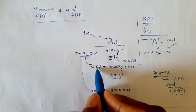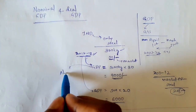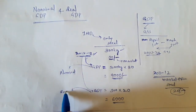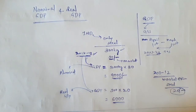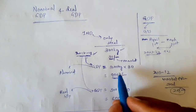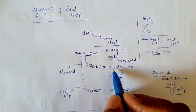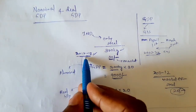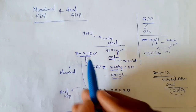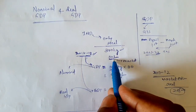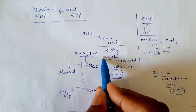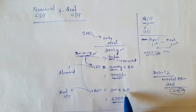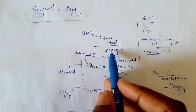Now here we see a difference: one of these calculations is nominal GDP and the other is real GDP. For nominal GDP, we take the goods produced in the year 2017-18 and the market price of that same year — that is 2017-18. The goods produced are the same — 300 kg — but the difference lies in which year's price we use.